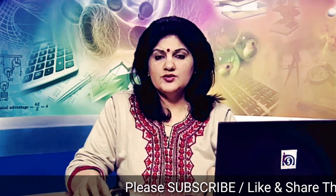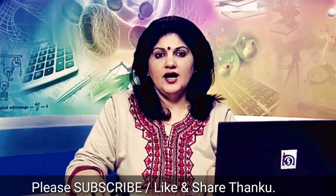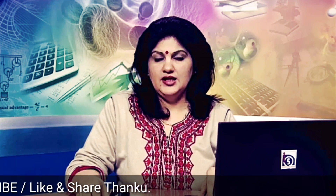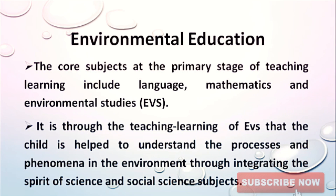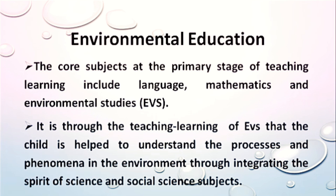The natural world is very complex and human activities can have unexpected consequences that are hard to reverse. Therefore, the study of both physical and biological processes that maintain life, and how humans affect nature, requires a broad interdisciplinary perspective. The core subjects at the primary stage include languages, mathematics, and environmental studies, through which the child is helped to understand the environment by integrating science and social science.